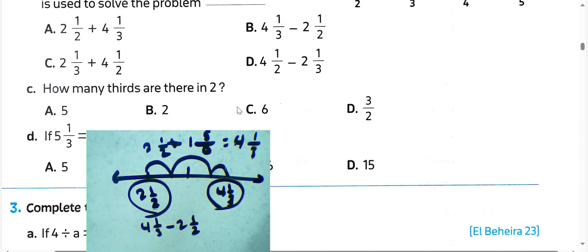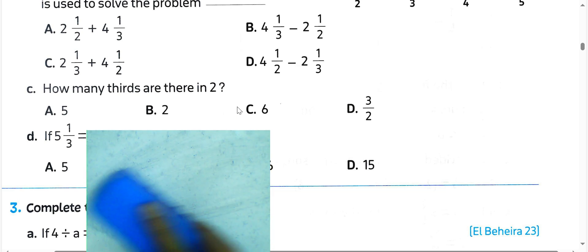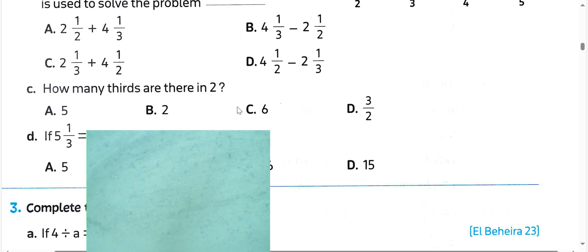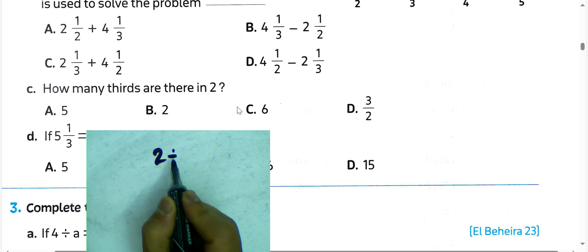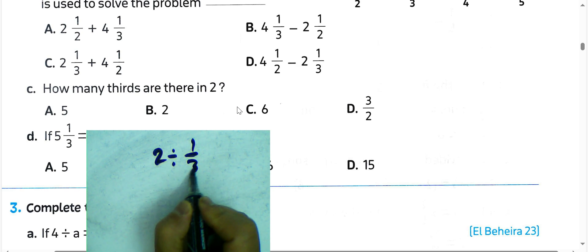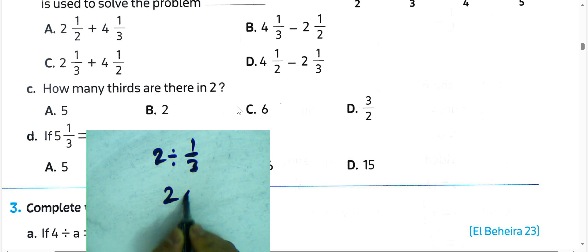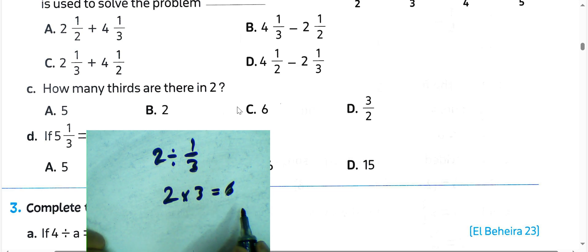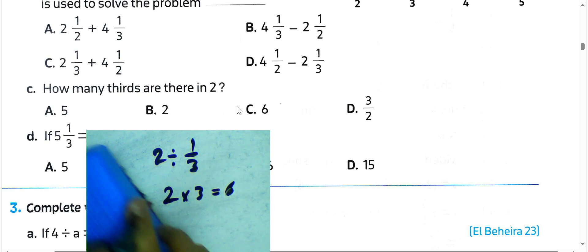Next question: how many thirds are in 2? We can write 2 divided by one-third, and convert from division to multiplication. The result will be 2 times 3 equals 6. Choose letter C.